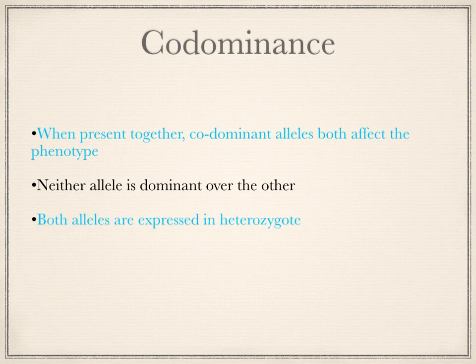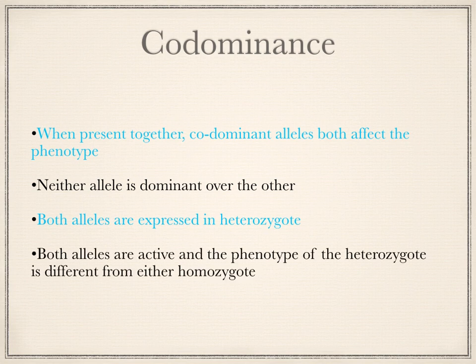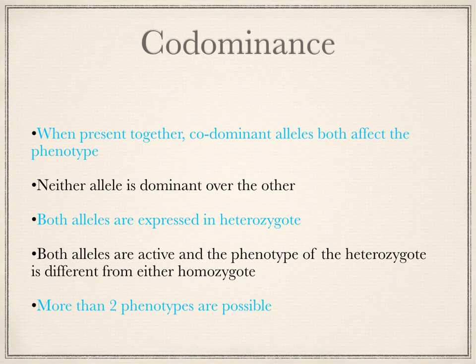Both alleles are expressed in the heterozygote — in the offspring. The red and the white, when both expressed together, will produce a pink flower. Both alleles are active, and the phenotype of the heterozygote is different from either homozygote. So the offspring, the pink flower, is different in phenotype to both the red parent and the white parent, meaning more than two phenotypes are possible.